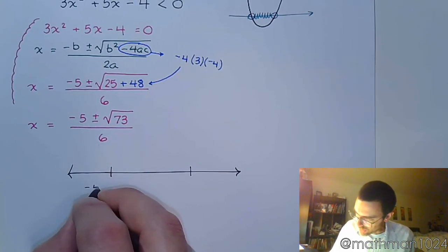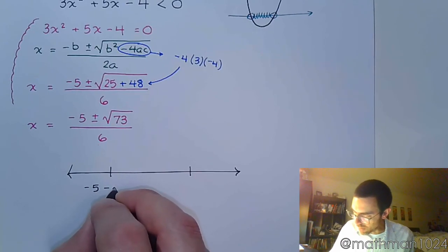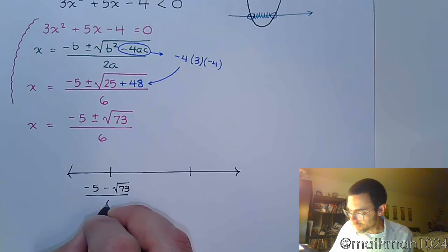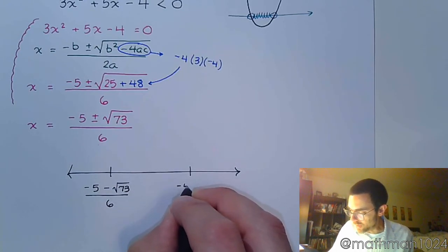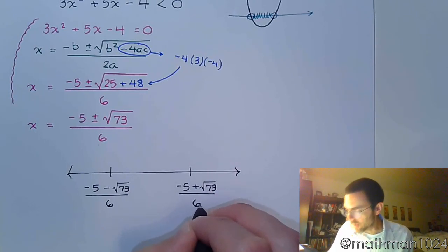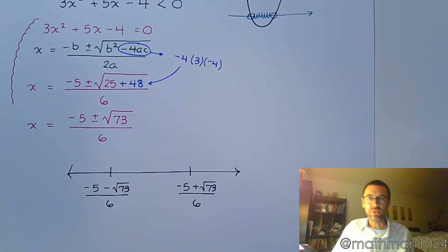So this is going to be the critical value, negative 5 minus the square root of 73, all divided by 6. And this one is going to be negative 5 plus the square root of 73, all divided by 6. It's not the prettiest looking number, but it is exact.